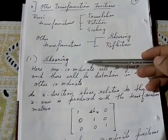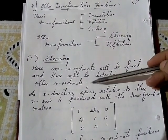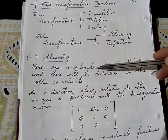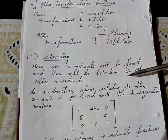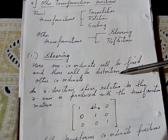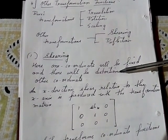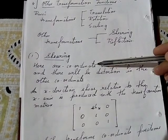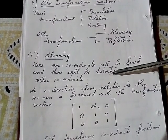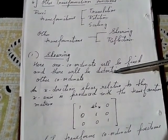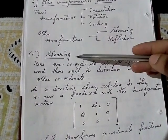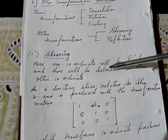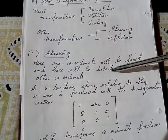In shearing, when two coordinates x and y are given, one coordinate will be fixed and there will be a distortion in the other coordinate. That means if x is fixed, y will change; if y is fixed, x will change. So shearing means one coordinate remains fixed and the other faces distortion.